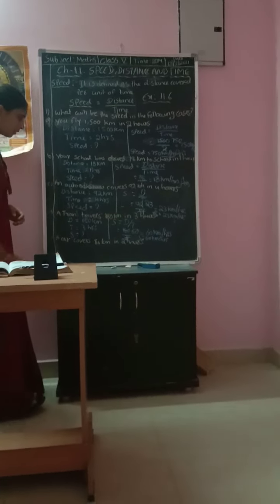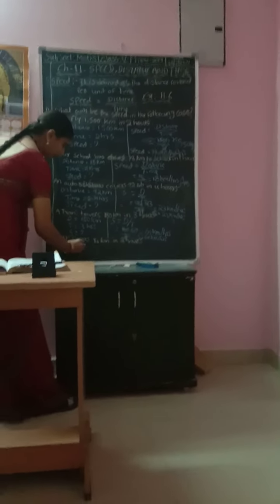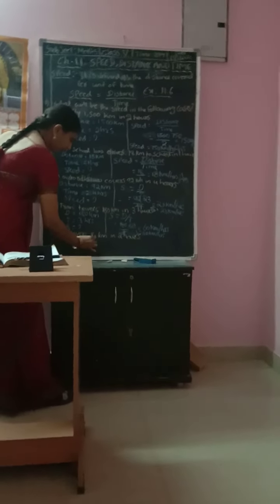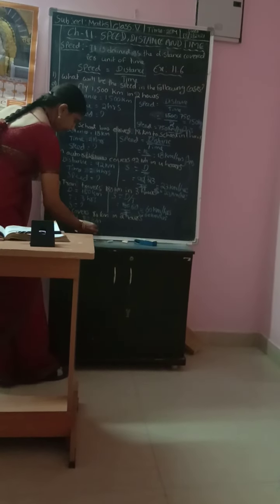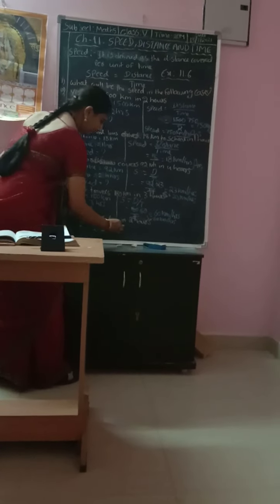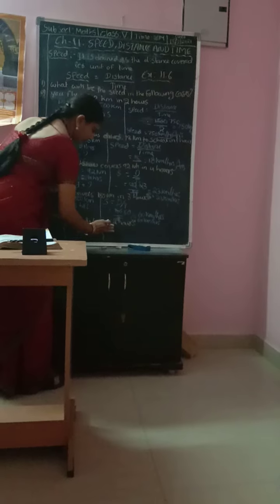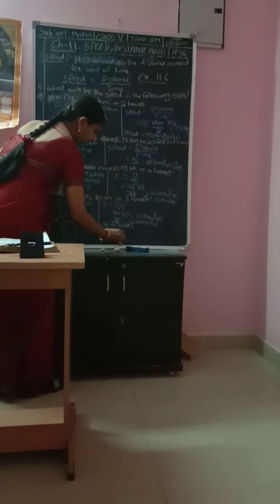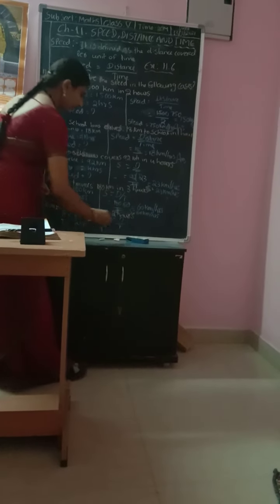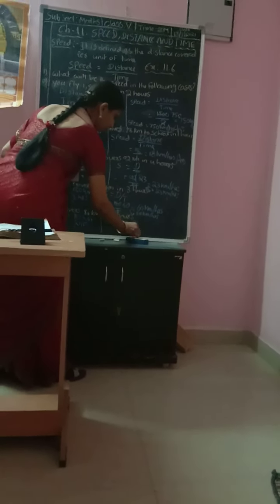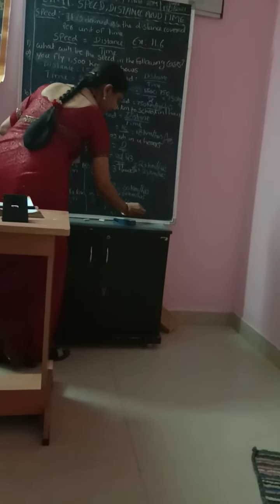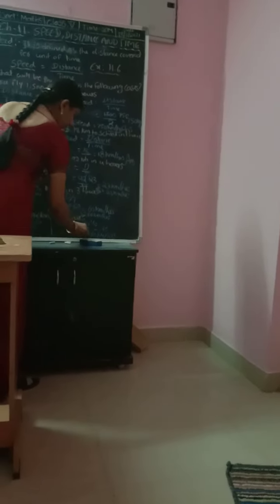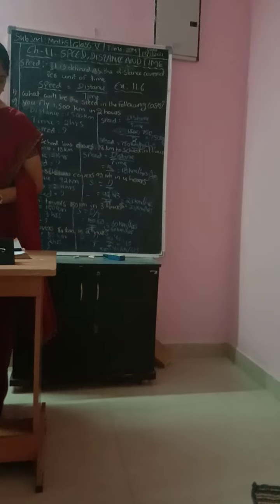Next, a car covers 80 km in 2 hours. D is equal to 80 km and T is equal to 2 hours. S is equal to D divided by T — 80 divided by 2 — so S is equal to 40 km per hour. This completes exercise 11.6 of the 11th chapter on Measurements.